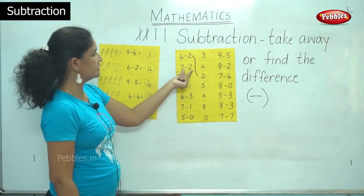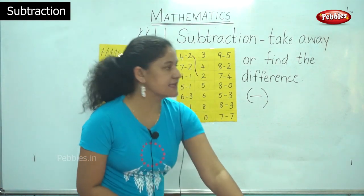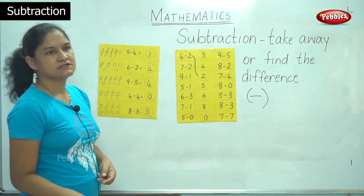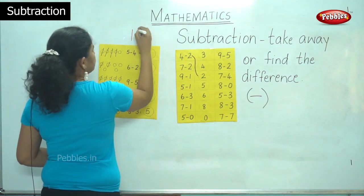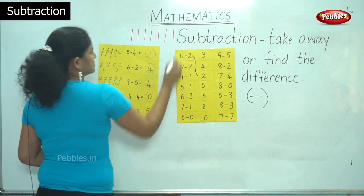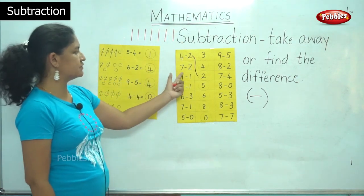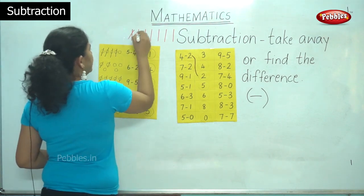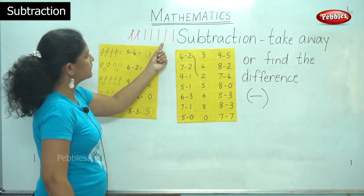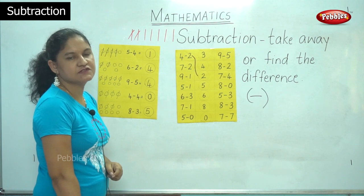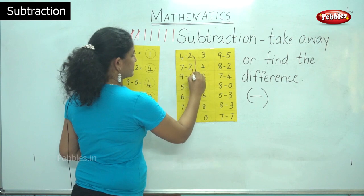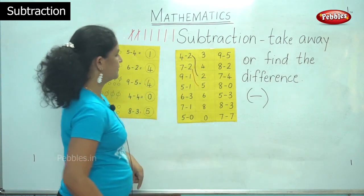The next I have 7 minus 2, or 7 take away 2. So I am going to use these small sticks. I have 1, 2, 3, 4, 5, 6, 7. I have 7 sticks and I am supposed to take away 2 sticks: 1, 2. So what is my answer? 1, 2, 3, 4, 5. So my answer is 5. 7 minus 2, or 7 take away 2, gives me 5. So I match it with number 5.